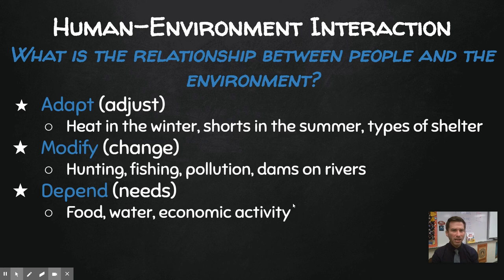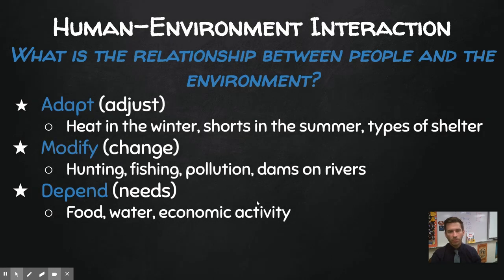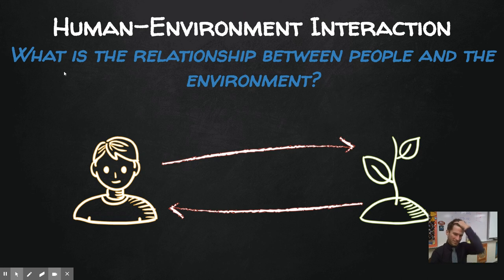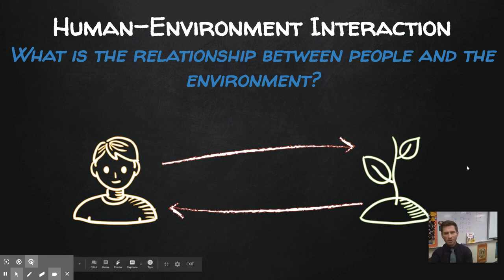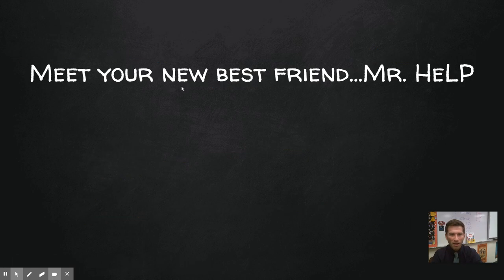So there we go — human-environment interaction: we adapt to our environment, we modify our environment, and we depend on our environment. That is, we adjust, we change, and we need. You can sketch it out simply as a human and an environment interacting with one another.